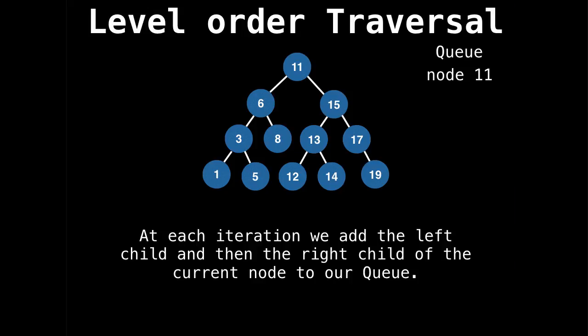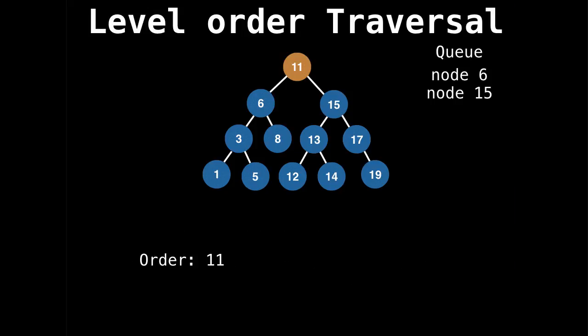And then I would keep adding children to the queue so that I reach them eventually. So I've pulled 11 from the queue and now added 6 and 15 to the queue. Now the next thing on the top of the queue is 6. So I'd remove 6 and add 6's children, 3 and 8 to the queue. Then 15's next up. And I would add 15's children which are 13 and 17 to the queue.